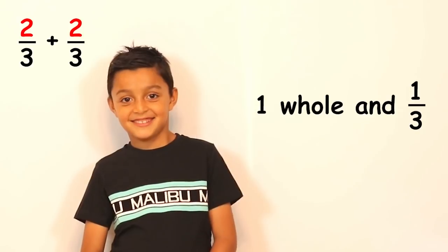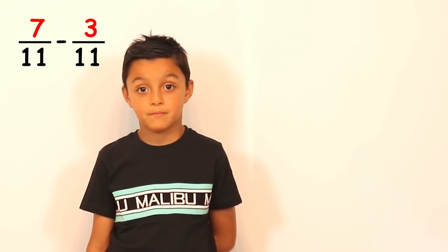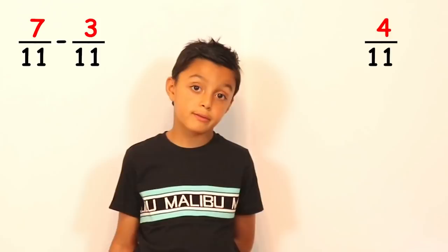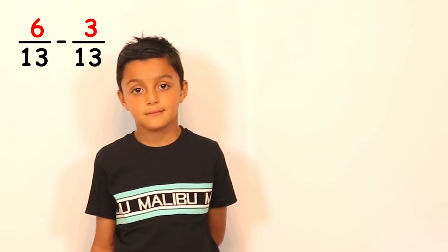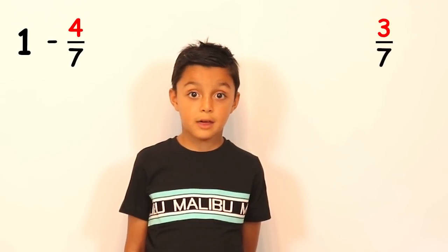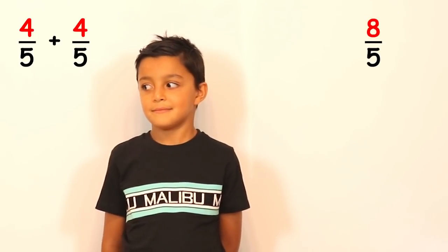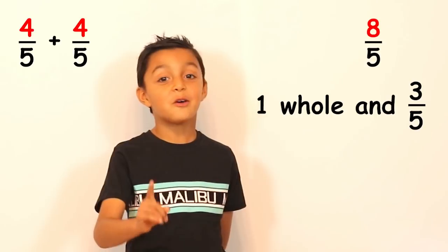Very good Niall. How many thirds is it? Four. Very good. Seven elevenths take away three elevenths. Four elevenths. Six thirteenths take away three thirteenths. Three thirteenths. One whole take away four sevenths. Three sevenths. Last question. What is four fifths plus four fifths? Eight fifths, or one whole and three fifths. Very good Niall.